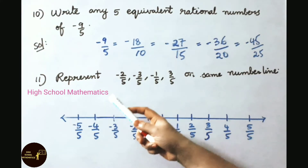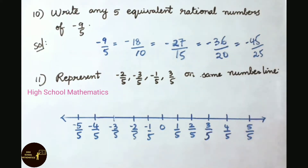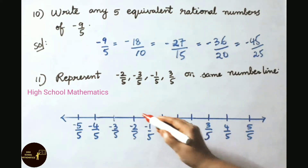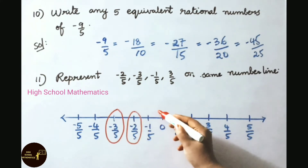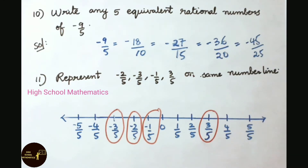Question number 11: Represent minus 2 by 5, minus 3 by 5, minus 1 by 5, and 3 by 5 on the same number line. We draw a number line with 0 in the center. On the right side we place positive rational numbers: 1/5 up to 5/5. On the left side we place negative rational numbers: minus 1/5 to minus 5/5. We mark minus 2/5, minus 3/5, minus 1/5, and 3/5 on the number line. All given rational numbers are now marked on the same number line.